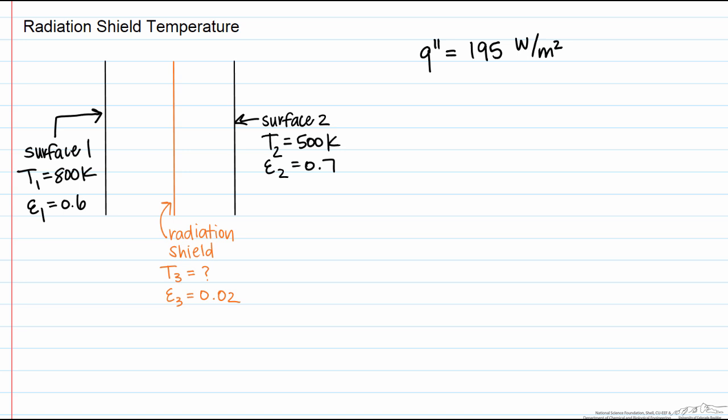Note that the flux stays constant throughout the system so we can look at any part of the system. In this case what we're going to do is look at the system between surface one and the first surface of the radiation shield. So let's draw the circuit between them.